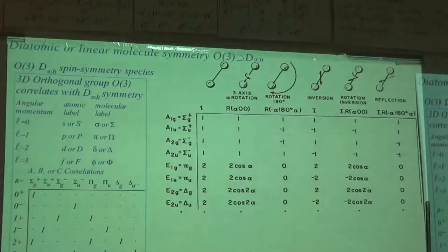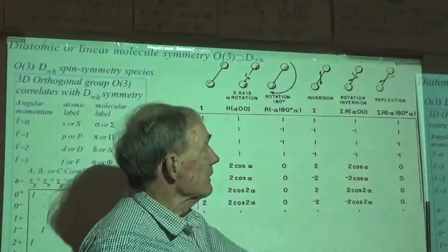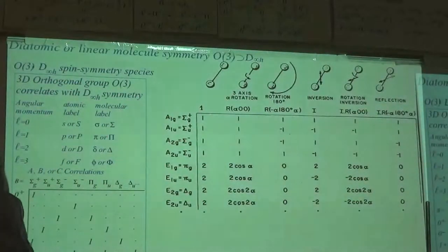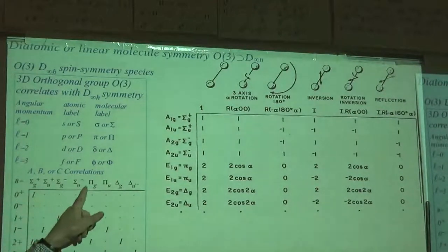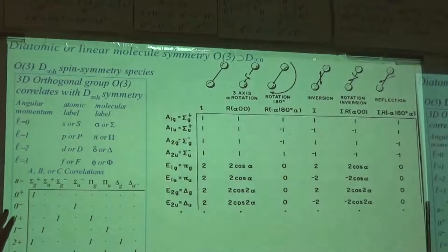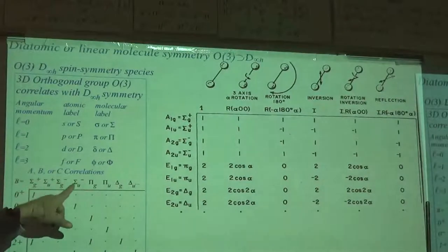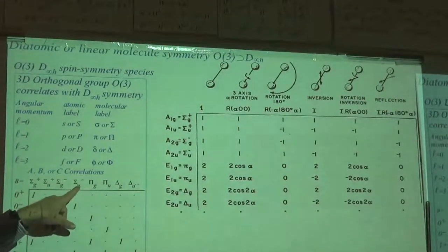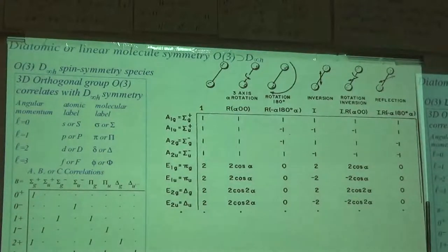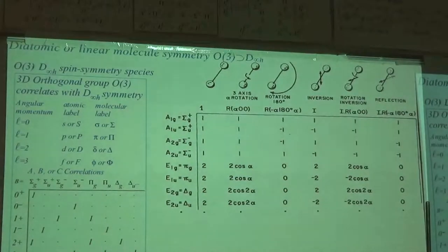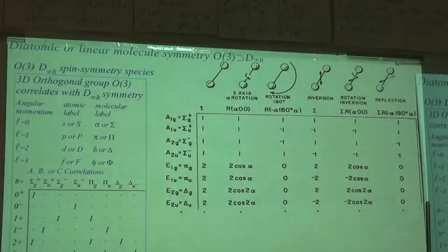There's the character table — that's all there is, because there's an infinite number of values of the rotation parameter. What we want to know is how angular momentum parity correlates with those representations. This is what we had to do with the octahedral thing — we had A1G, A2G, all the way down to T1 and T2G and then the U representations. So we had 10 of these things for Oh on top of the infinite number of values of J parity.